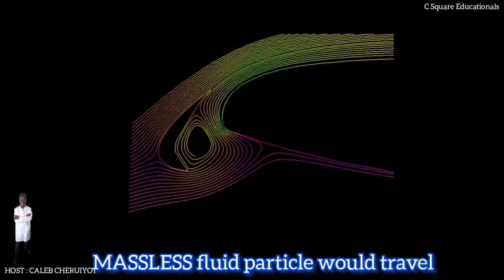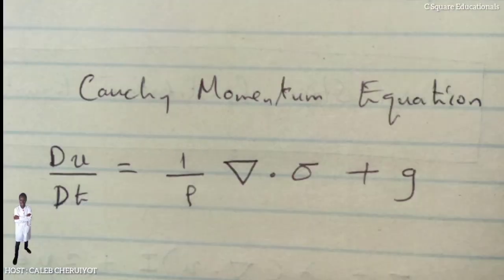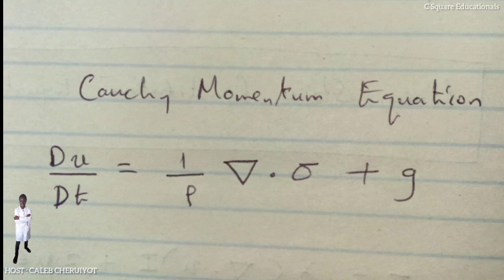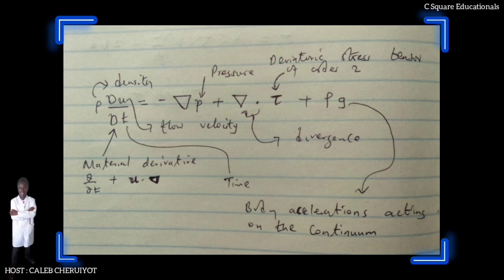These paths are the integral curves whose derivative at each point is the vector field, and they can represent visually the behavior of the vector field at a point in time. The Navier-Stokes momentum equation can be derived as a particular form of the Cauchy momentum equation, whose general convective form is Du/Dt = (1/ρ)∇·σ + g. By setting the Cauchy stress tensor σ to the sum of a viscous term τ and pressure term π, we arrive at the Cauchy momentum equation in convective form: ρ Du/Dt = −∇p + ∇·τ + ρg.